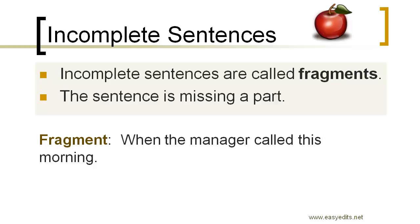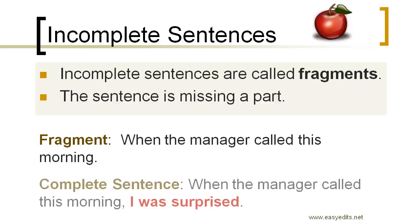Here's the complete sentence: 'When the manager called this morning, I was surprised.' Notice 'I was surprised' is a complete independent sentence. Everything coming before it — 'when the manager called this morning' — is what we call a subordinate clause. You could also put this clause at the back and it would still make sense: 'I was surprised when the manager called this morning.' So you can rearrange words and phrases, as this example shows.